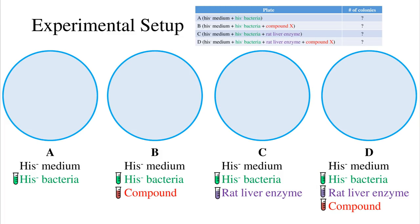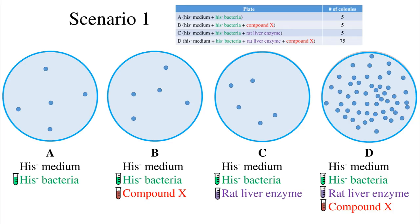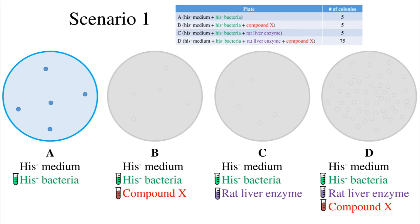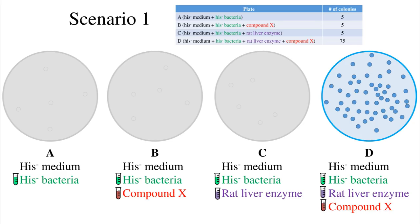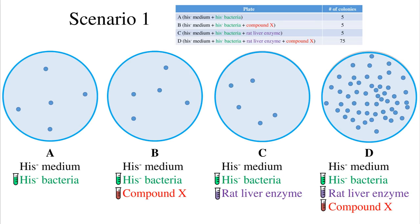Now we will walk through three different scenarios. We perform the AIMS test on compound X. On plate A there are 5 colonies, on plate B there are 5 colonies, on plate C there are 5 colonies, and on plate D there are 75 colonies. Let's walk through our results one plate at a time to see what each plate tells us.